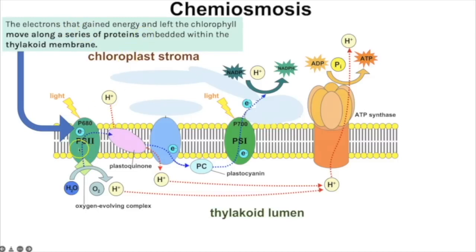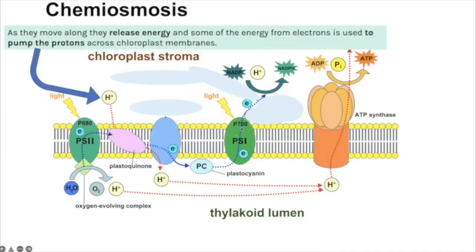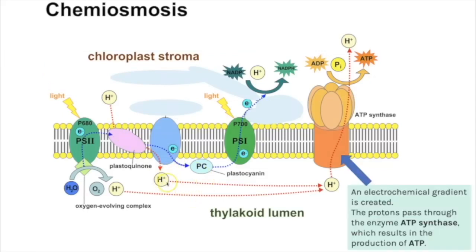In chemiosmosis, those excited electrons move along a series of proteins embedded within the thylakoid membrane. As those electrons move along the proteins they release energy, and some of that energy is used to pump protons from the stroma across a protein and into the thylakoid lumen. This builds up an electrochemical gradient, because we have charged ions.